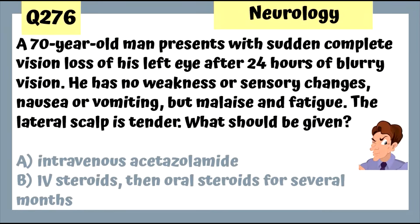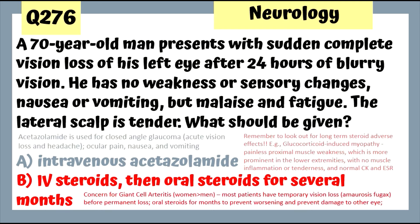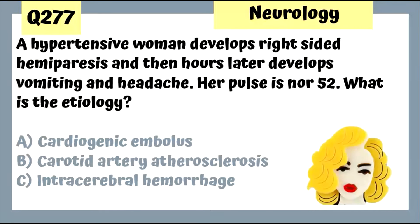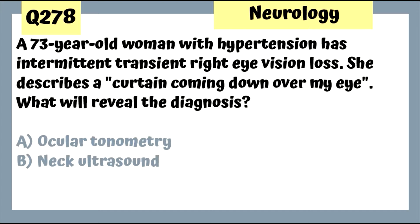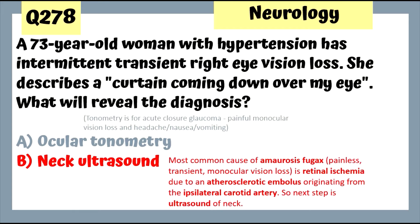Question 276: A 70-year-old man with sudden complete vision loss of his left eye after 24 hours of blurry vision, with a tender lateral scalp — we're worried about giant cell arteritis. Give IV steroids then oral steroids for several months. Watch for glucocorticoid-induced myopathy and other adverse effects. Question 277: A hypertensive woman develops right-sided hemiparesis then vomiting and headache — this is intracerebral hemorrhage. Hemorrhagic strokes tend to have focal symptoms that rapidly progress to signs of elevated ICP.